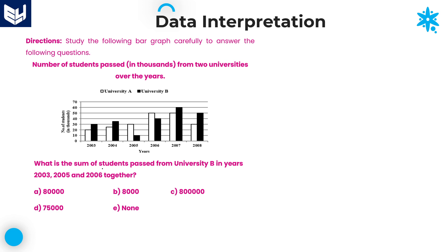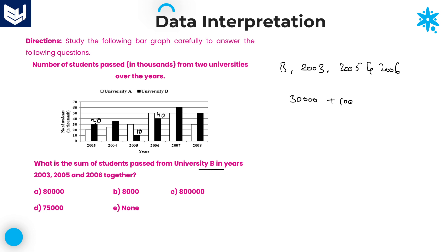Next question: what is the sum of students passed from University B in the years 2003, 2005 and 2006? We need the summation of all three years from University B. In 2003 the value is 30, in 2005 the value is 10, and in 2006 the value is 40. Adding: 30,000 plus 10,000 plus 40,000 equals 80,000. Option A is the right answer.